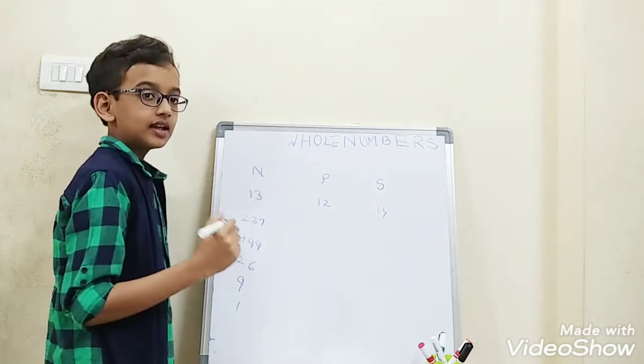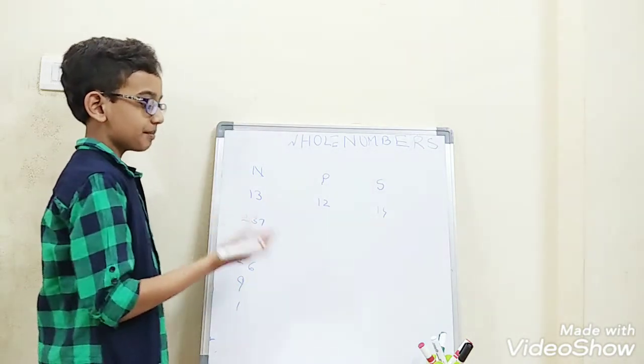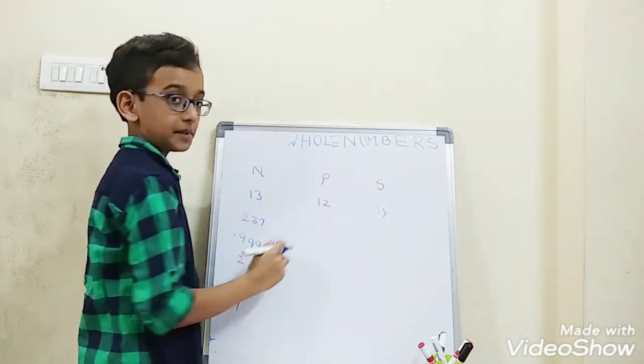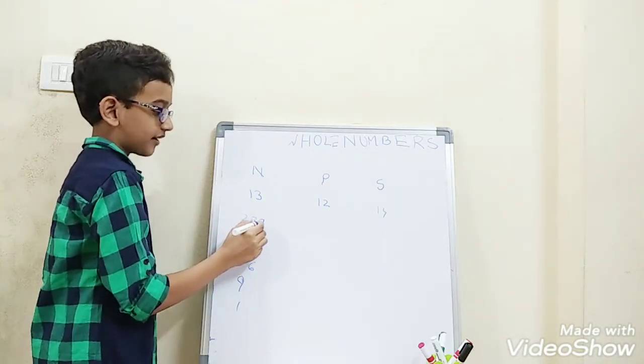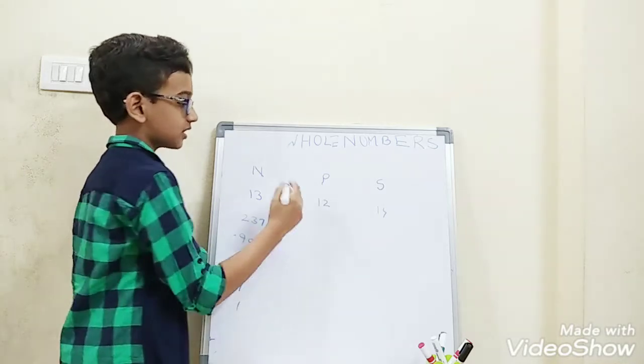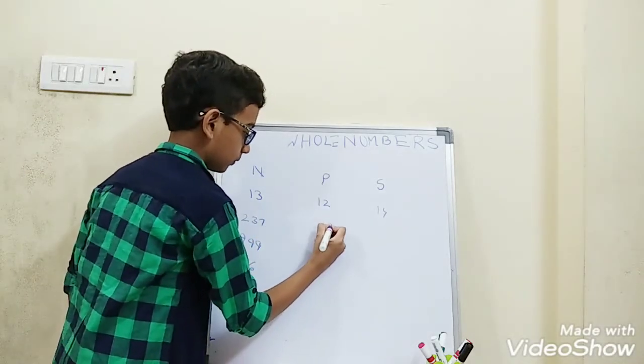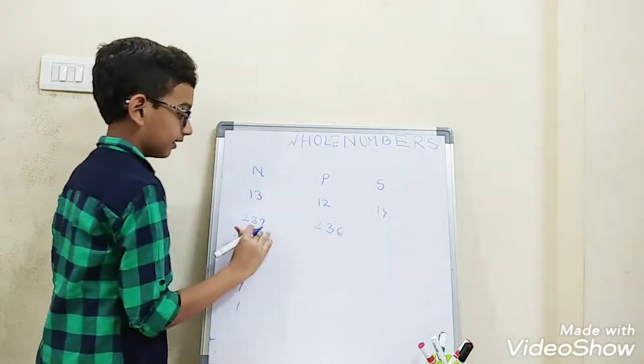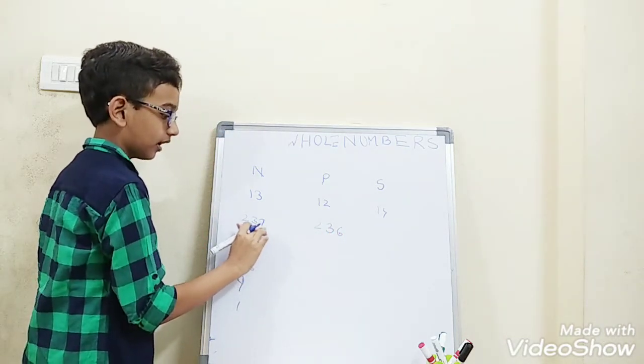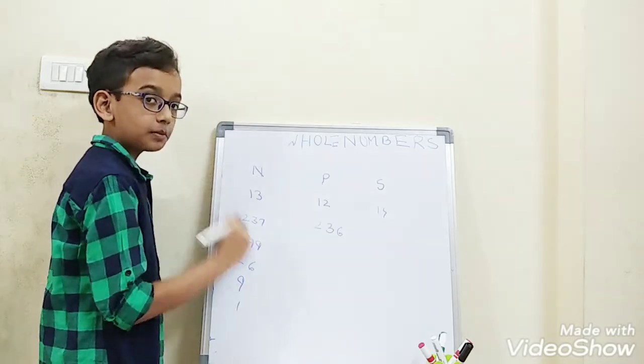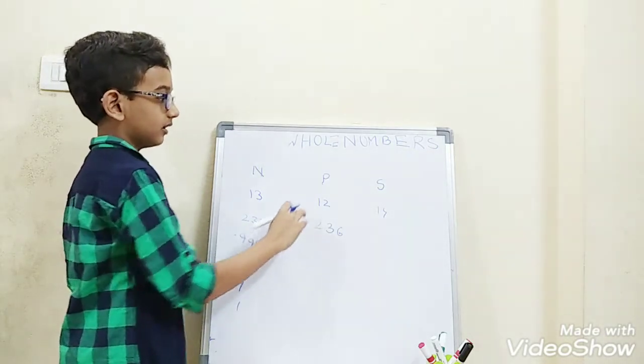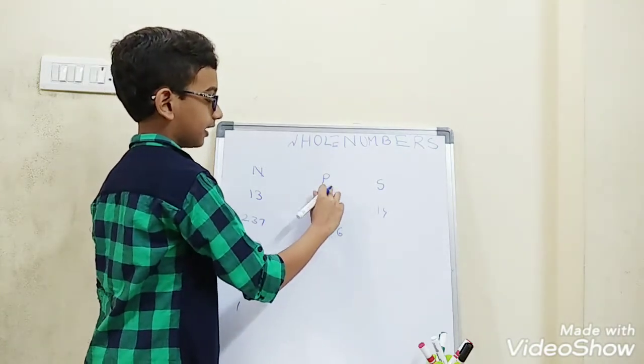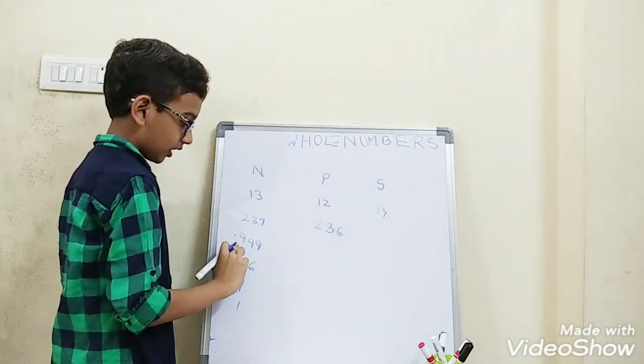Let's do 237. The predecessor means the before number. The before number is 7 minus 1 is 6, so 236. When there are 3 place values, more than 1 place value, the 1 place number will only change in the predecessor and successor.